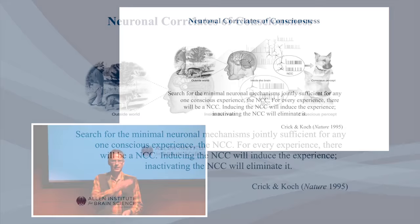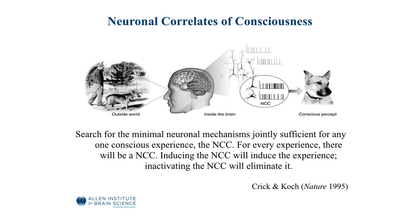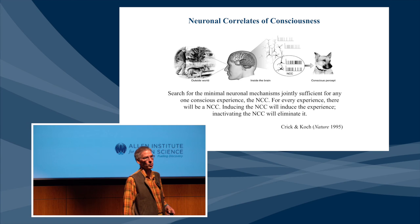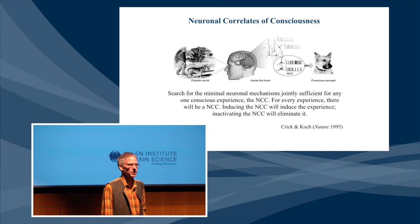The modern approach to studying consciousness is really based on studying its neuronal correlates — what today is called the neuronal correlates of consciousness. The idea is, for any one specific conscious experience, such as the experience of seeing a German shepherd, there's some set of neuronal mechanisms in the brain that are jointly sufficient to give rise to that conscious sensation. The question is: where are those neuronal mechanisms?